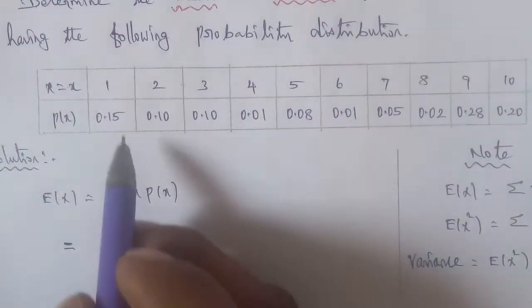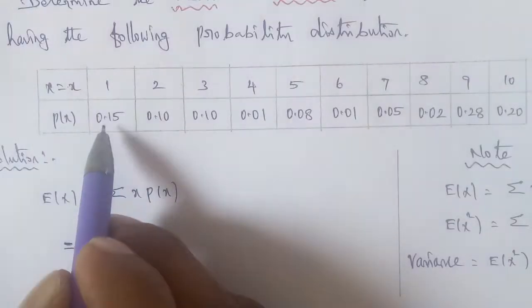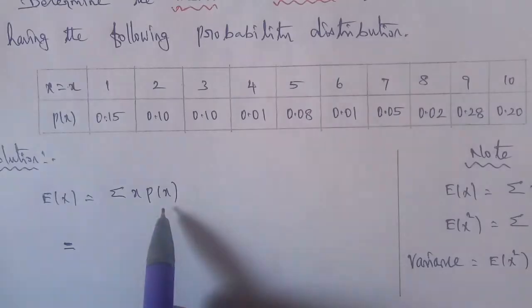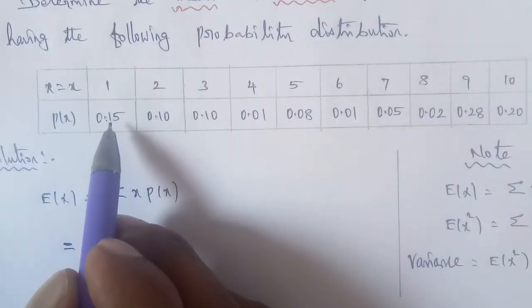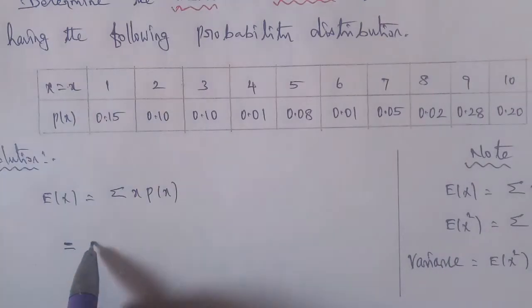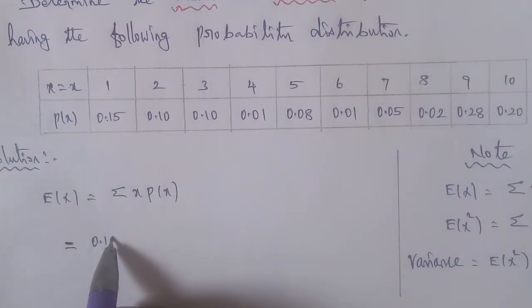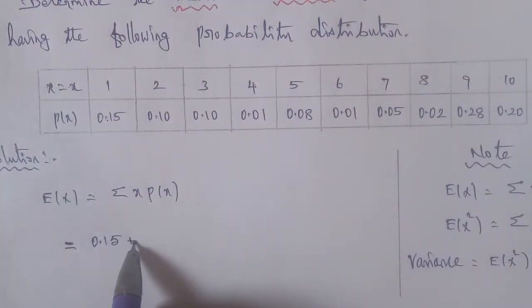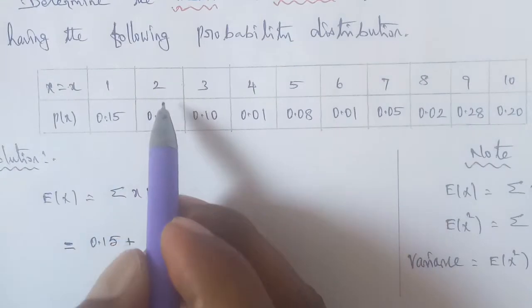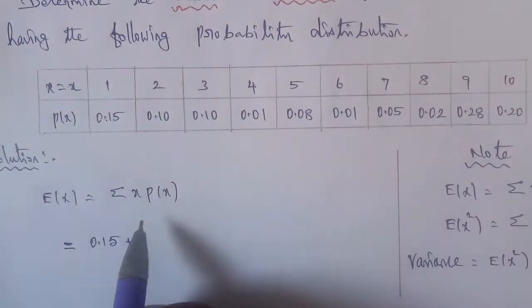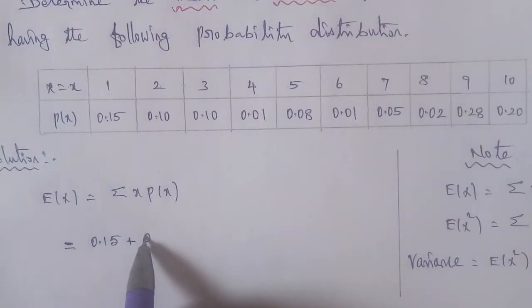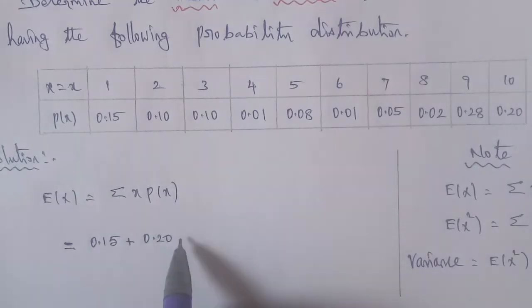First, x = 1, p(x) = 0.15, so 1 × 0.15 = 0.15. Next, x = 2, p(x) = 0.10, so 2 × 0.10 = 0.20. Running summation: 0.15 + 0.20 = 0.35.